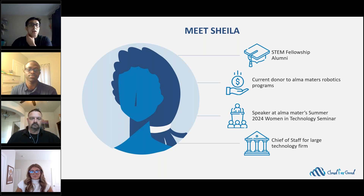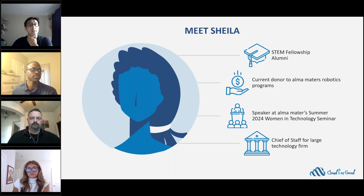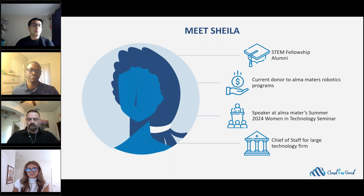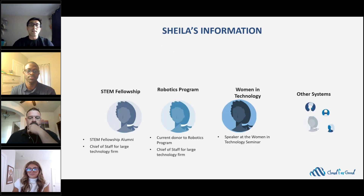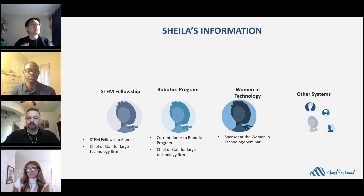Now meet Sheila. She has some extraordinary accomplishments: a STEM fellowship alumna, current donor to the robotics programs, speaker at the Women in Technology Seminar, and chief of staff at a large technology firm. Being a former student who donates to programs she was involved in, she's a huge advocate for the organization, and the potential to unlock her network and the connected community of leaders would be very significant. But how do we know that the four different roles we just described are the same physical person?